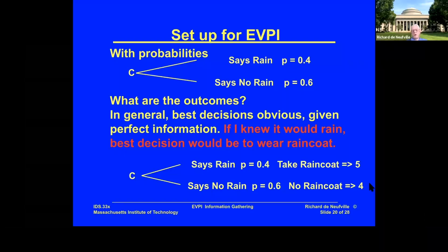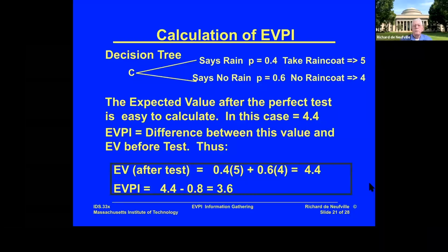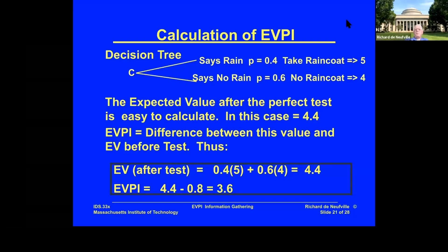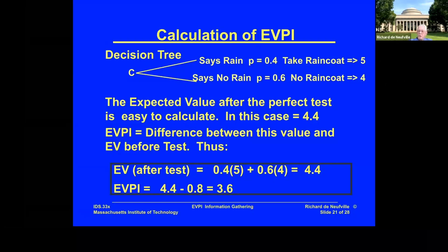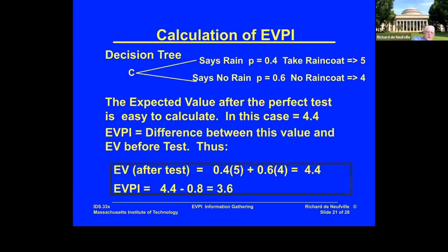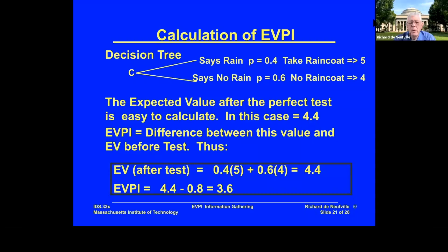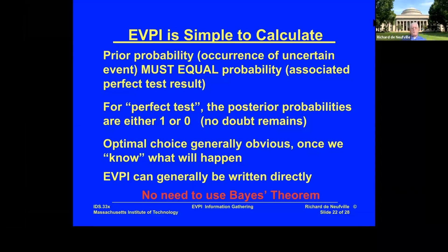The expected value after using the Cassandra machine is: 0.4 times 5 plus 0.6 times 4, which equals 4.4. Now the Expected Value of Perfect Information is the value of the increment — not the final value, but what you gained from the information. The expected value after the test was 4.4; the expected value before the test was 0.8; therefore the EVPI in this case is 3.6.